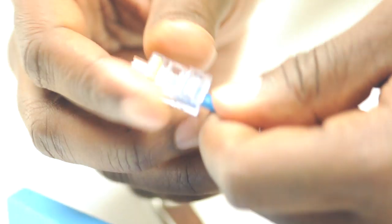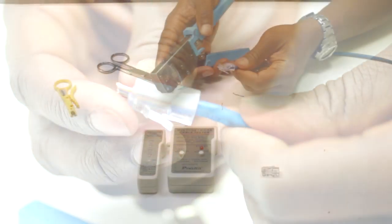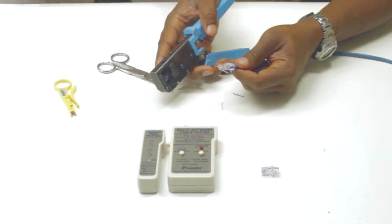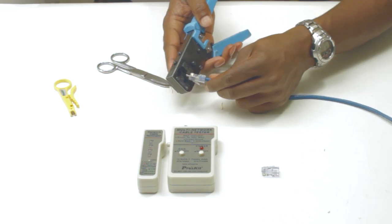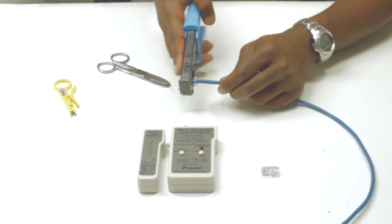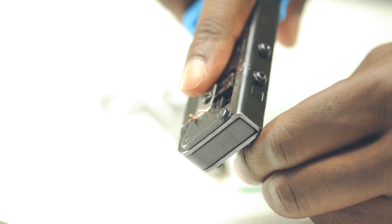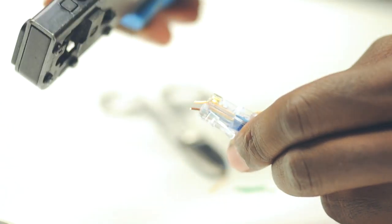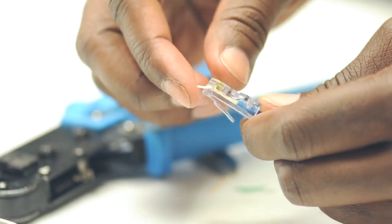Once I have fed the wires through the connector and I visually confirm that it matches the color code, I can crimp it on. Using the patented EZRJ45 crimp tool that both crimps and cuts off the extra cable, I have securely attached the connector.